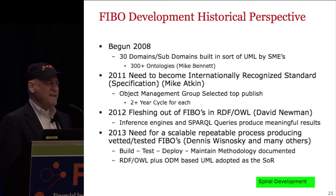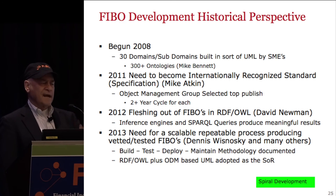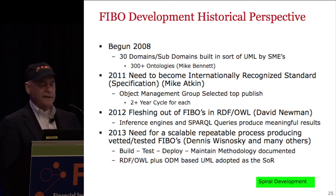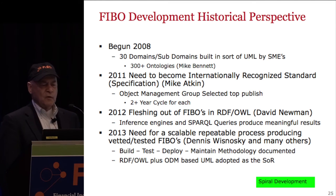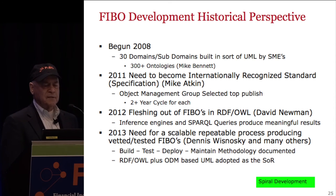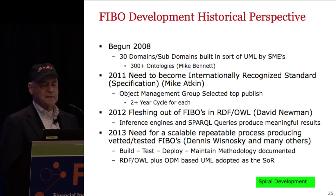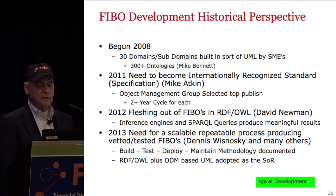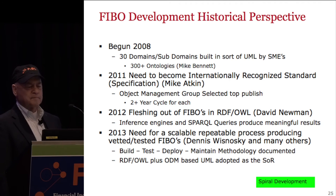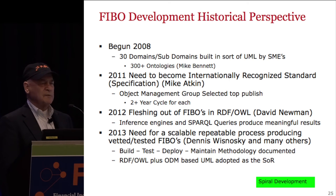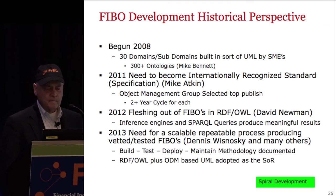Beginning in 2012, we fleshed out FIBO, taking what were business conceptual models in UML and beginning to do FIBO in RDF OWL in a very big way, and that's still going on. The FIBO-V vocabulary that David talked about is an RDFS version of FIBO — it's taxonomy, not a true ontology. Even better, we can go from an RDF OWL model to a natural language listing, like a business index. In 2013, we moved into being able to scale FIBO, so we developed a build, test, deploy, maintain methodology — much like we build airplanes in DOD. It's RDF OWL plus ODM-based UML, adopted as our system of records.